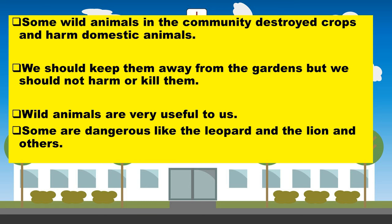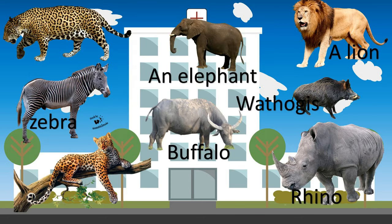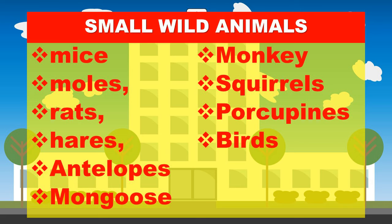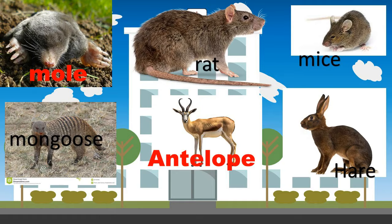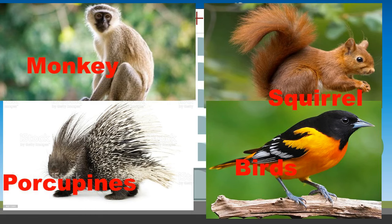Learners, some are dangerous like leopard, lion, and others. We have some small wild animals that we should keep away. For example, we have mice, moths, rats, hares, antelope, monkeys, swallows, porcupines, and birds.